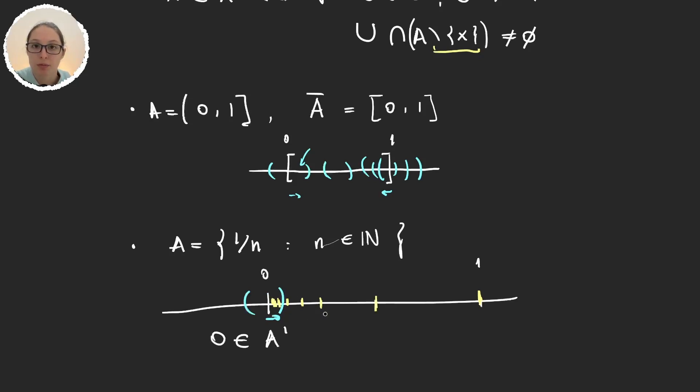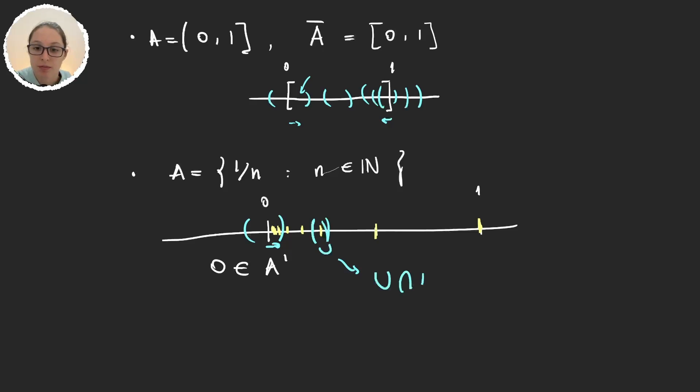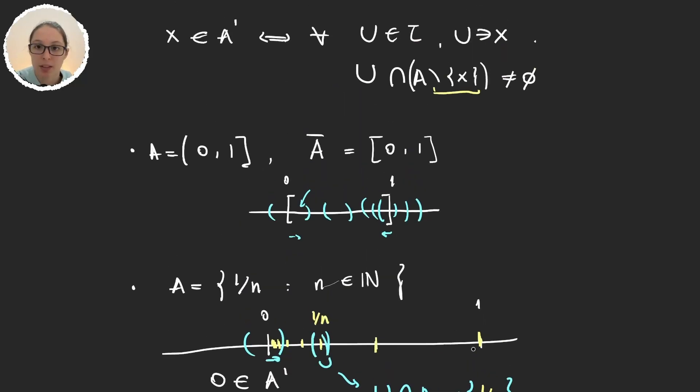What about the elements of A itself? Well if I take this 1/n, then I can always find this open interval, let's call it U. And for this open interval U ∩ A is only this point of the form 1/n. And so with this we have that U ∩ (A \ {1/n}) is empty. And so it's not satisfying the definition of being a limit point, in which we required every neighborhood to have non-empty intersection with A minus the point we were considering.